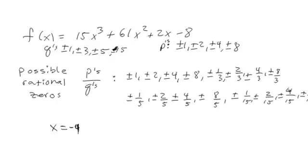Okay, so we use negative 4. Remember how this works? We take our x value, negative 4, and then what goes in here in this division is our coefficients of the polynomial f of x. So we get 15, 61, 2, and negative 8.